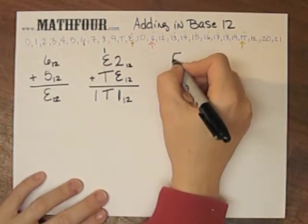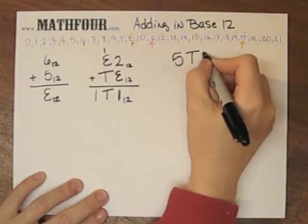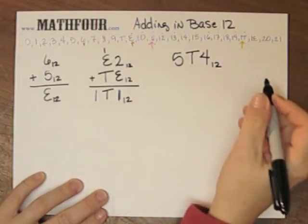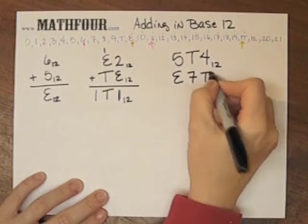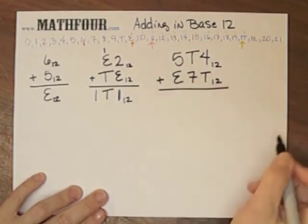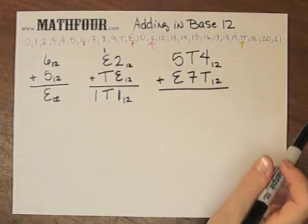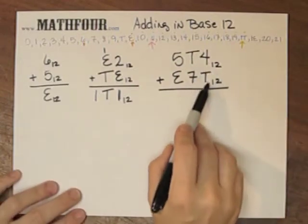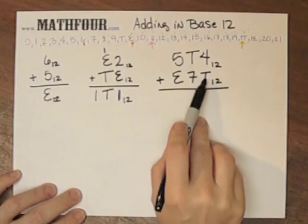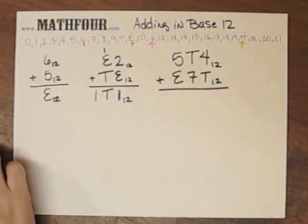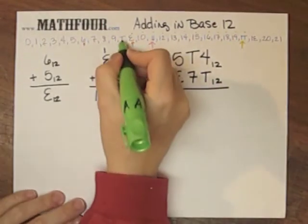So one more. 5T4 base 12 plus E7T base 12. Add these two. So here I can start at 4 and count up, count to 10 across, or I can start at T and count 4 across. So I'm going to start at T, which is here, and count 4.